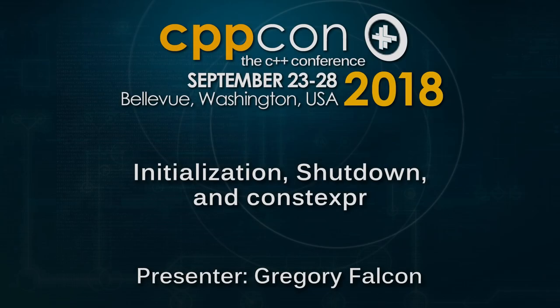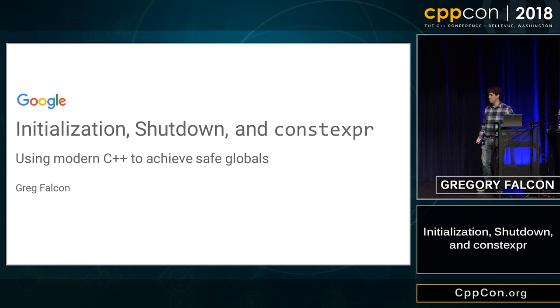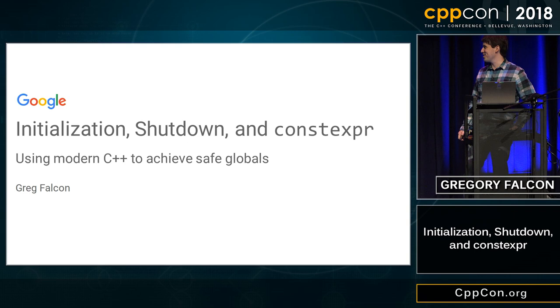Hi everyone, my name's Greg Falcon, I'm from Google. I'm team lead of the Abseil team, the project where we're open sourcing a lot of our core vocabulary libraries. We're still doing it — we just released some cool hash tables today, so you should go check those out. It's really cool stuff and I'm excited.